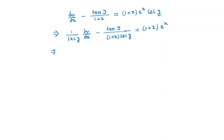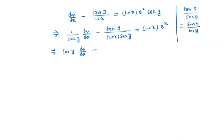Now note that 1/sec y is nothing but cos y · dy/dx. And tan y divided by sec y: since tan y is sin y / cos y, and 1/sec y is cos y, so tan y / sec y simplifies to sin y. So the equation becomes cos y · dy/dx minus sin y / (1+x) equals (1+x) e^x.